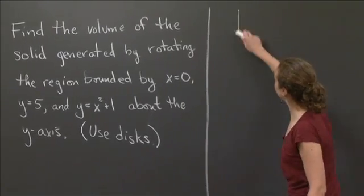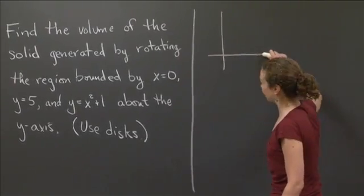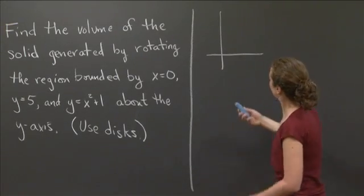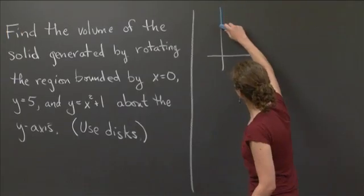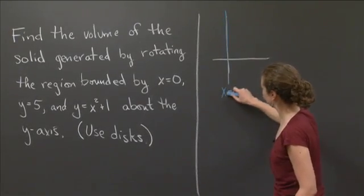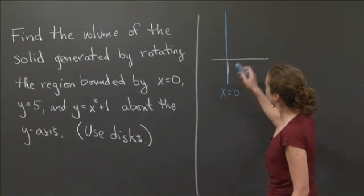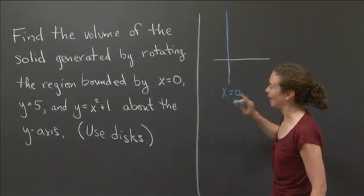So let's see. We know we've got the region. Let me actually even use some different colored chalk. We'll say x equals 0 is actually the y-axis. That's x equals 0. And then y equals 5. Actually, we'll put that in last.